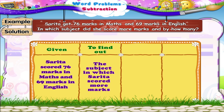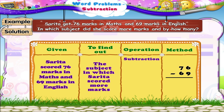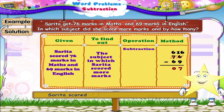Let us find out how many marks more. We shall subtract 69 from 76. We cannot subtract 9 units from 6 units, so we borrow one 10, that is 10 units. On subtracting 9 units from 16 units, we get 7 units. Next, 6 tens minus 6 tens is equal to 0. Thus, Sarita scored 7 marks more in maths than English.